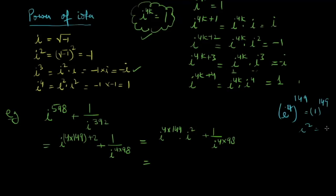iota square equals minus 1. We have 1 into minus 1 plus 1 upon, iota to the power 4k to the power 98 is 1. So minus 1 plus 1 equals zero. This is how we solve iota raised to power 4k problems.